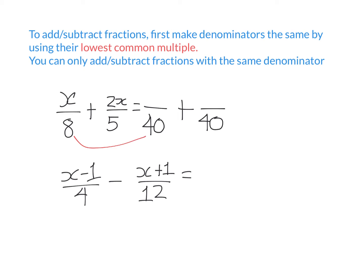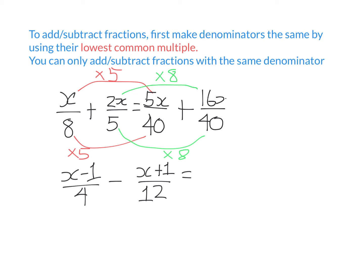To get from 5 to 40, I multiply that denominator by 8, so I also multiply the top by 8: 2x times 8 is 16x. Now we have the same denominator of 40. You simply add the numerators — 5x plus 16x is 21x — but you never add the bottoms; you leave the denominator exactly as it is. The final answer is 21x over 40.